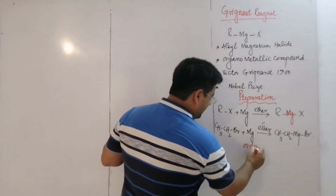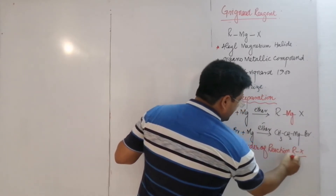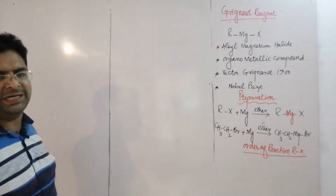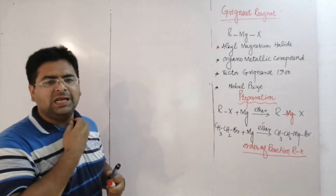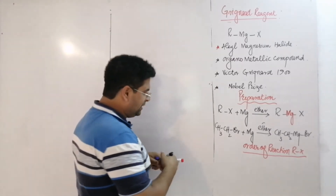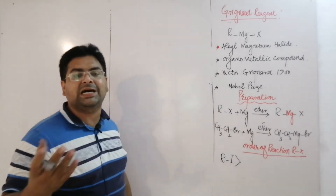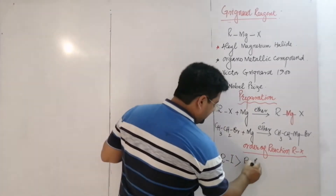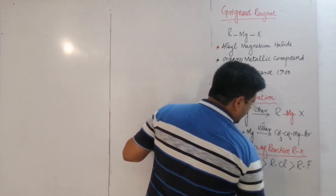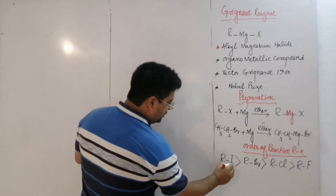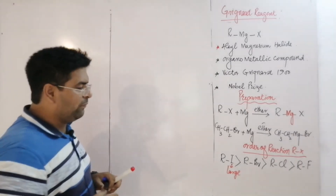Now let us look at the order of reactivity of alkyl halides — which alkyl halides form Grignard Reagent most easily. The larger the halogen group, the more easily the Grignard Reagent forms. Alkyl iodide forms it most easily, followed by alkyl bromide, then alkyl chloride, and least easily alkyl fluoride.